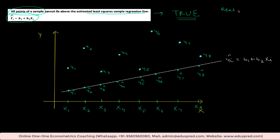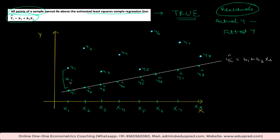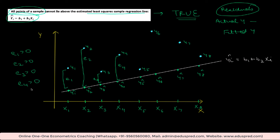How do we define residuals? The residuals are the difference between the actual y value and the fitted y value. So the first residual is y1 minus y1-hat, called e1. The second residual is y2 minus y2-hat, called e2. Then y3 minus y3-hat is the third residual, y4 minus y4-hat is e4, and so on. In this scenario, e1 is positive because y1 is greater than y1-hat. Similarly, e2, e3, e4, and all residuals are going to be positive.